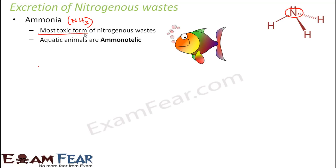Ammonia is generally present in aquatic animals like aquatic amphibians and fishes. That is why these animals are known as ammonotelic and this process of excretion of ammonia is called ammonotelism. Excretion occurs through body or gill surfaces. These aquatic animals generally have gills to survive in water, so the removal of ammonia takes place through the gill surfaces.